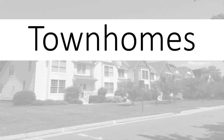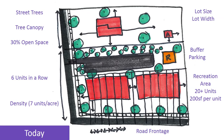Let's start with the form — townhomes. As you can see here in purple are all the different regulations we have on townhomes today: street trees and tree canopy, the amount of open space, the number of townhomes that can be connected into one row of buildings, the overall density, the amount of road frontage required, the amount of recreation area needed in a development if you get over 20 units, that you have to buffer your parking so it can't be seen from other adjacent residential districts, the lot size and the lot width.